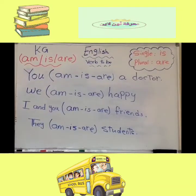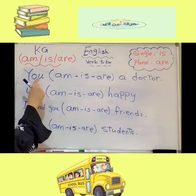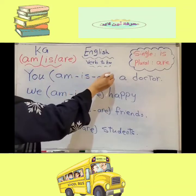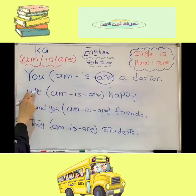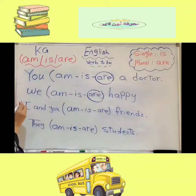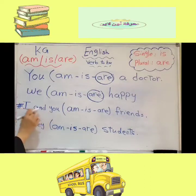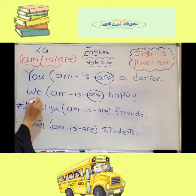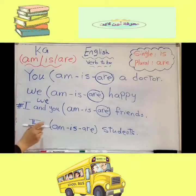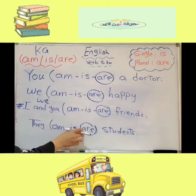You takes are — you are a doctor. We takes are — we are happy. Listen to this question: I and you refers to we, so I will take are — we are friends. They are students.